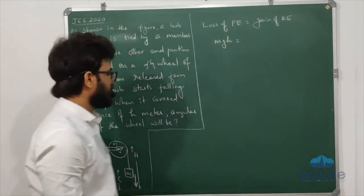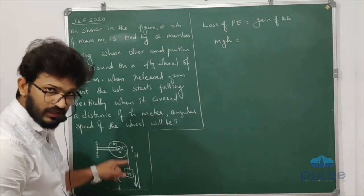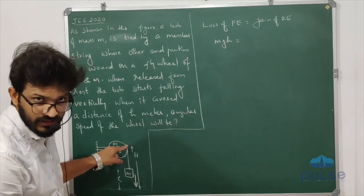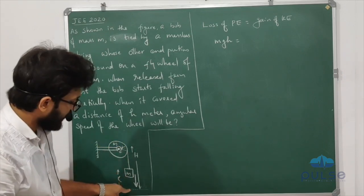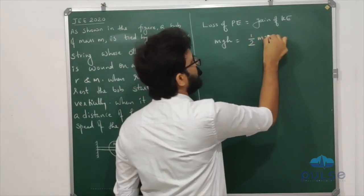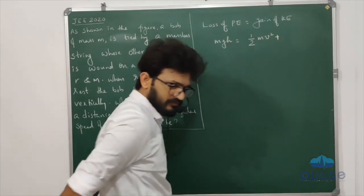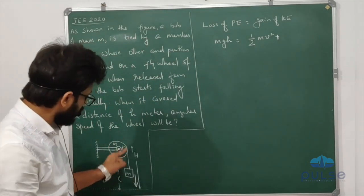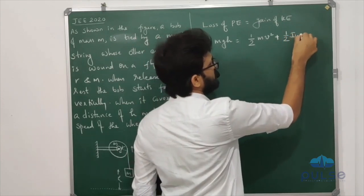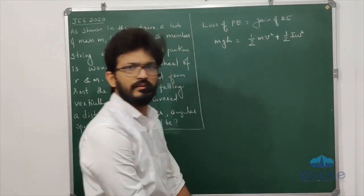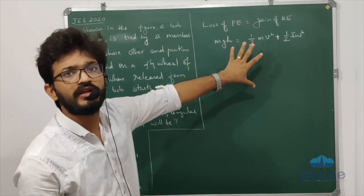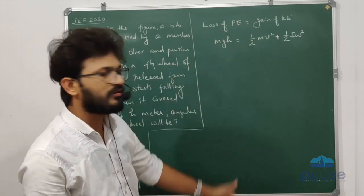The potential energy lost equals the gain in kinetic energy: half M into v squared, plus half I into omega squared. This is the general result — it is very concept-oriented. This covers the full mathematics of the problem.